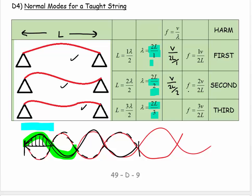Which when I rearrange it gives me 2v over 2L. And the next one would be v over 2L over 3, which gives me 3v over 2L.